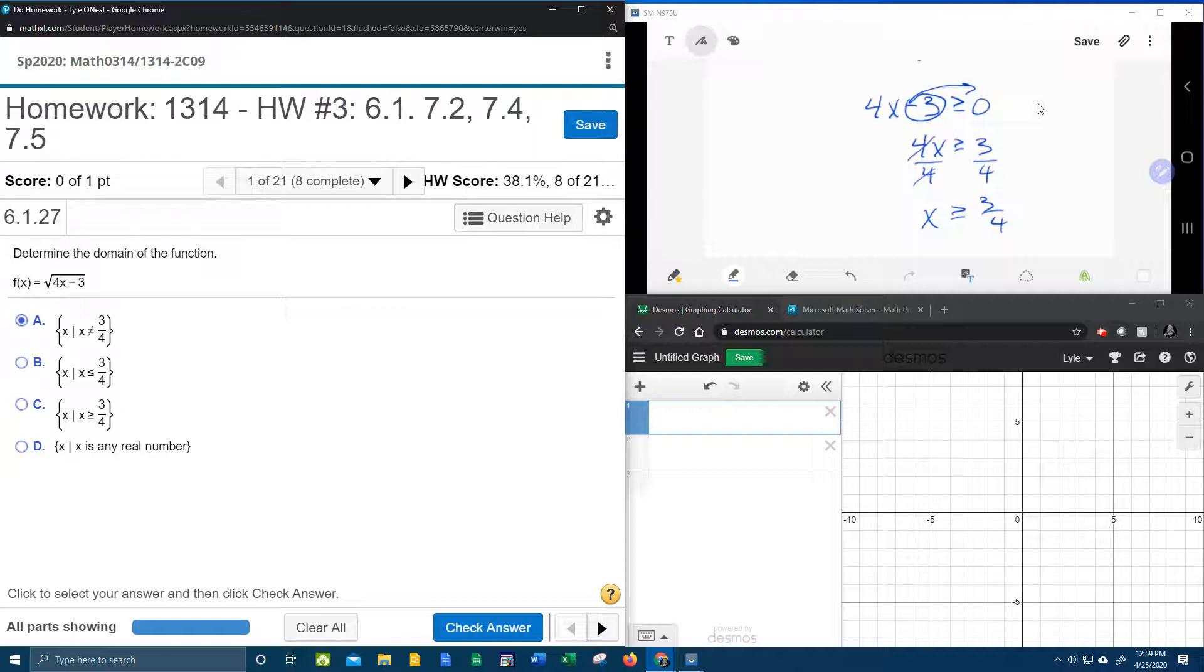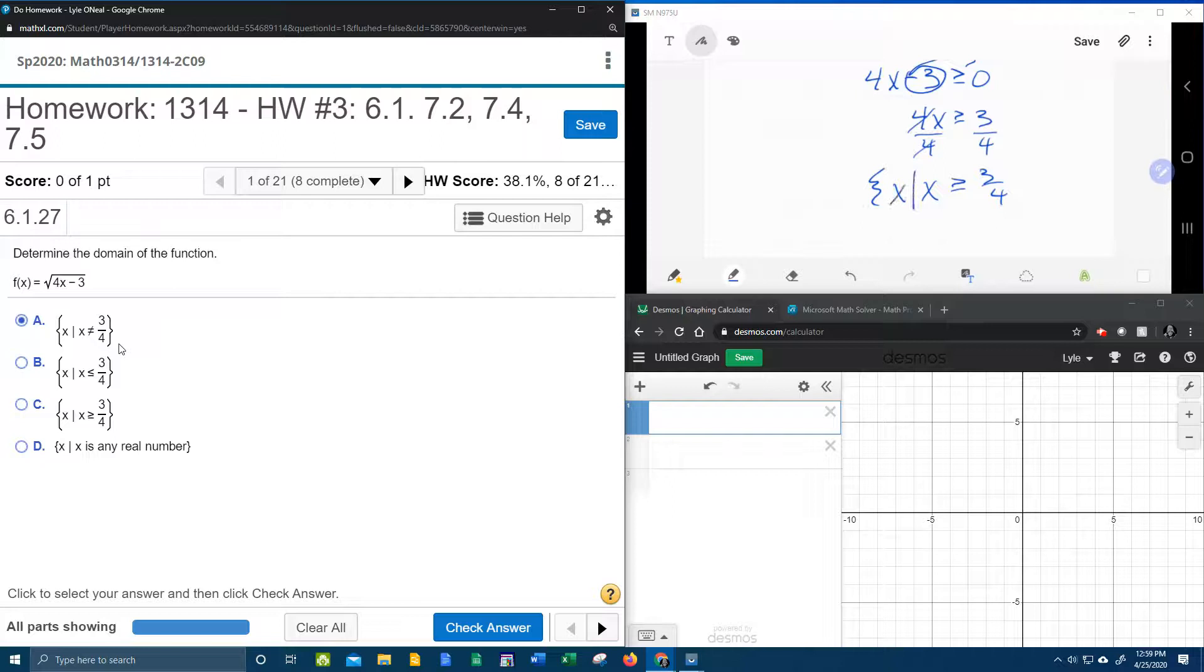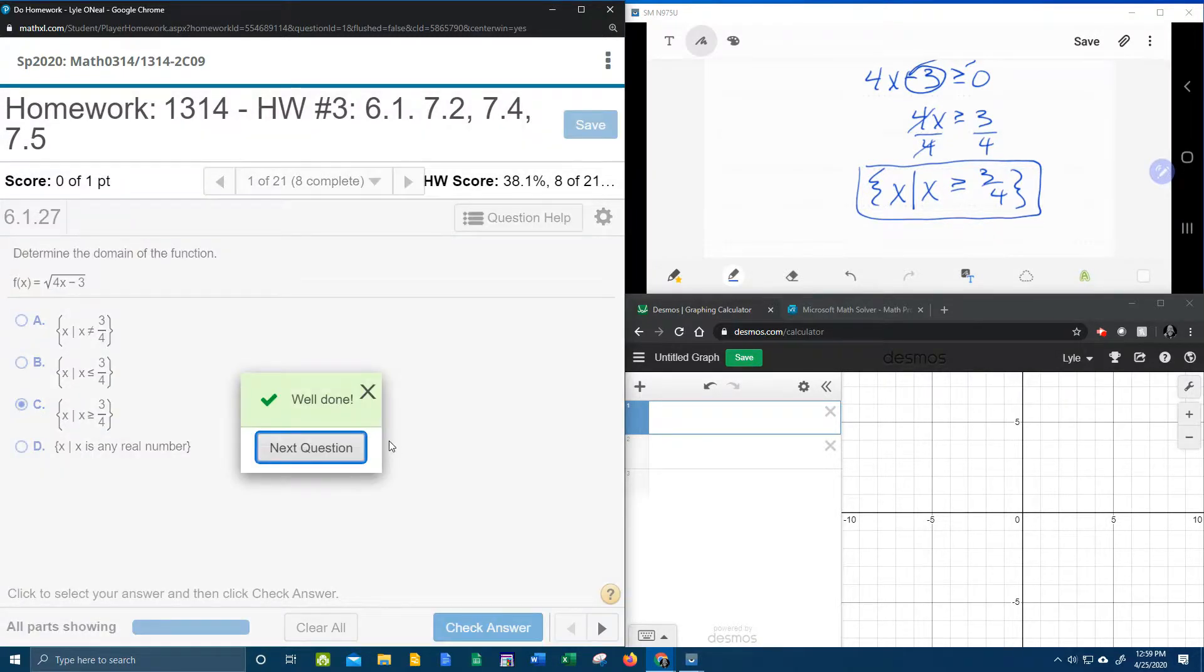Now they do want the answer written in set notation, and so if we look at the answer choices, we can see that set notation says the set of all x such that, and then we have the restriction, x has to be greater than or equal to 3 fourths, and that's done.